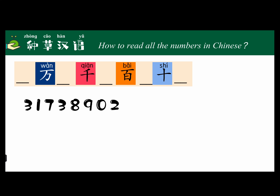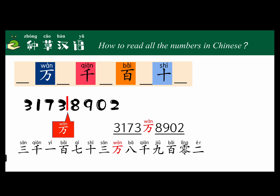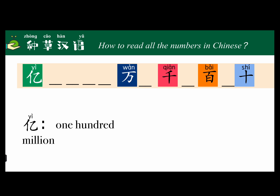31,738,902 — we are still counting from the back to front, four digits as a unit. We read it as 三千一百七十三万八千九百零二 (sān qiān yī bǎi qī shí sān wàn bā qiān jiǔ bǎi líng èr). If a number exceeds eight digits, we need to use the word 亿 (yì), which means one hundred million.